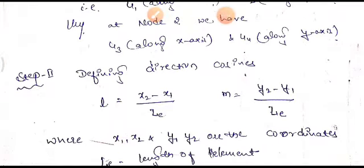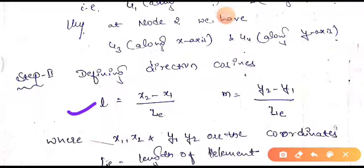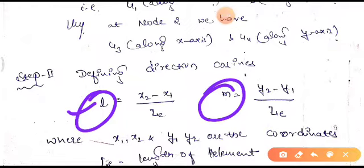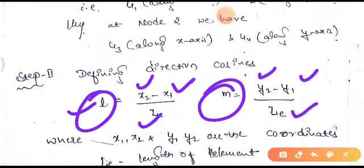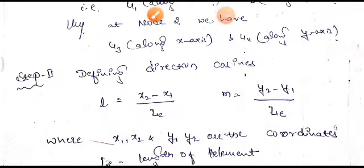The second step is to define the direction cosines. Here, l and m are the direction cosines, which are elements of the stiffness matrix. They can be calculated as: l = (x2 - x1) / length of element, and m = (y2 - y1) / length of element, where x1, x2, y1, y2 are the coordinates of each node.